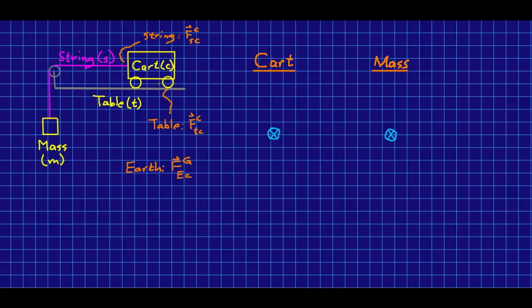Let's think about this situation of a cart on a table attached to a string which goes over a pulley to a hanging mass. And we'll draw the free body diagrams for both and just think about them a little bit.